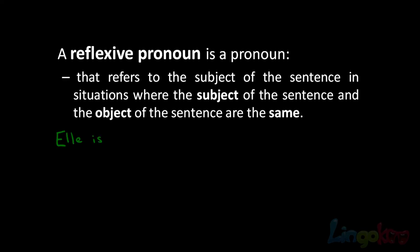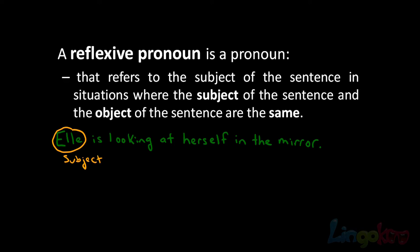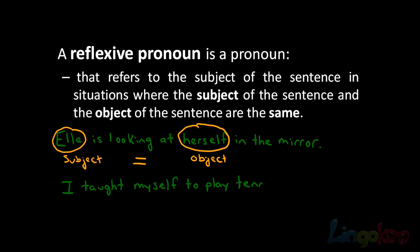Here's an example. The sentence: L is looking at herself in the mirror. What is the subject? L. What is the object? Herself. Who is herself referring to? Herself is referring to L. The subject L and the object herself are the same person. Another sentence would be: I taught myself to play tennis. I is the subject and myself is the object, and both represent the same person — the subject and the object are the same.